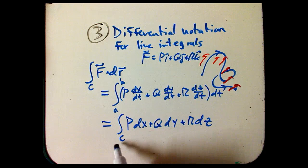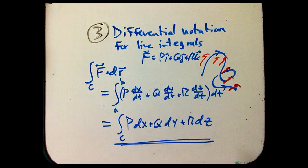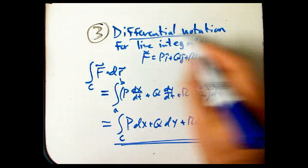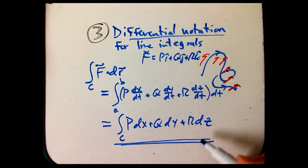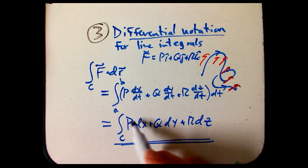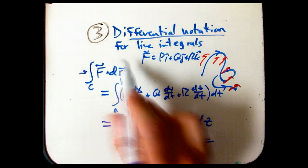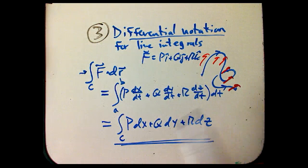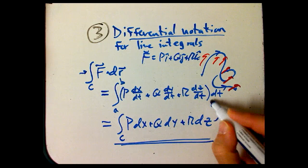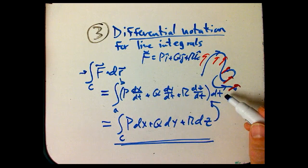And that's what happens if you parametrize it, and the dR turns into the components of the velocity, and the F turns into the PQR. And we've observed that you can kind of halfway go back to an abstract formulation by just formally canceling the dTs. And so this is a notation our book uses a lot, the differential notation for line integrals.